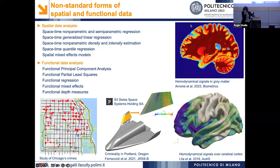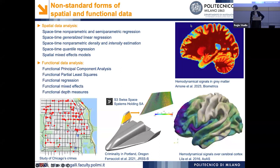The models we have developed are for spatial and for functional data analysis. For spatial data analysis, we have space-time non-parametric and semi-parametric regression, generalized linear regression, non-parametric density or intensity estimation, intensity estimation of inhomogeneous Poisson processes, space-time quantile regression, and mixed effect formulations. For functional data analysis, we have models such as functional principal component analysis, functional partially squared regression, functional regression, mixed effect formulations, and functional depth measures.